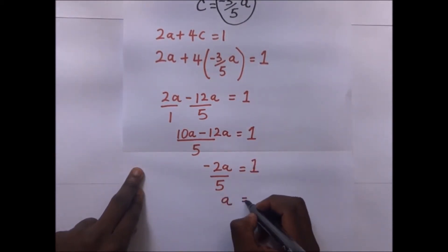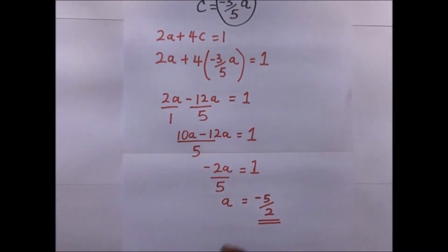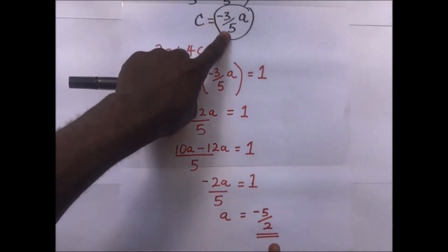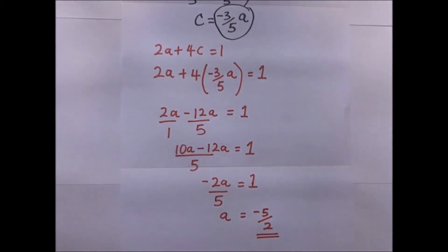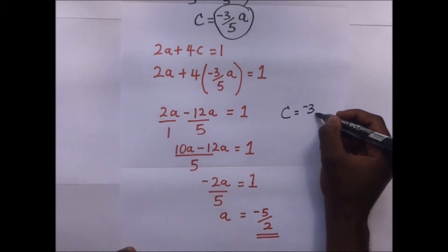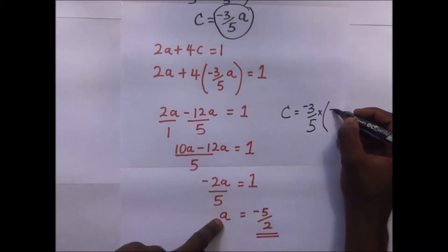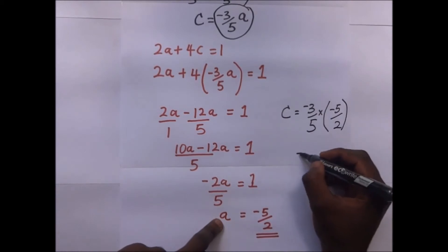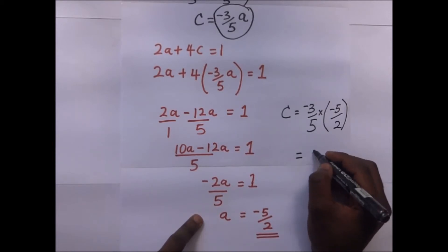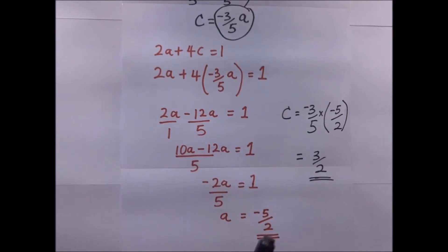We have found the value of A as -5/2. Now substituting back to find C: C = -3/5 × (-5/2) = 3/2. So our value of C is 3/2. We have now used these two simultaneous equations to get the values of A and C.